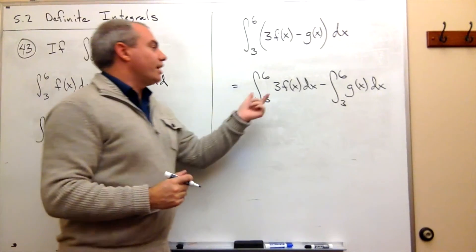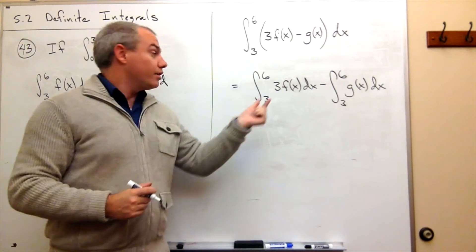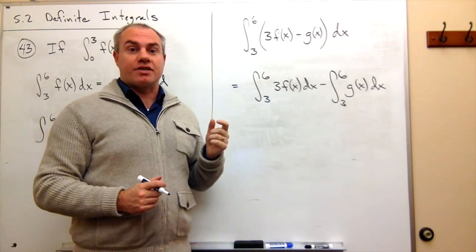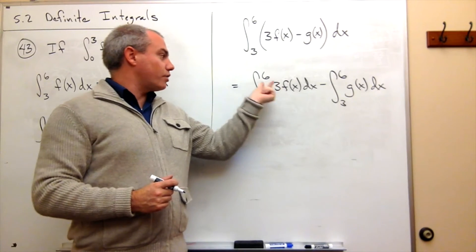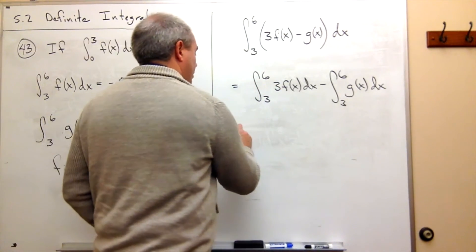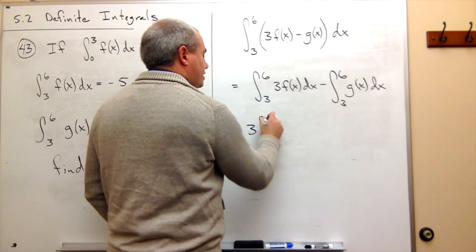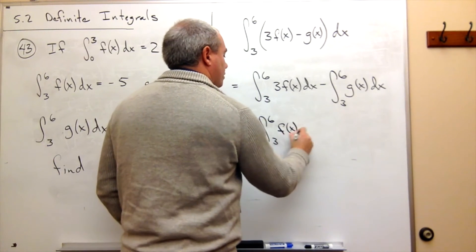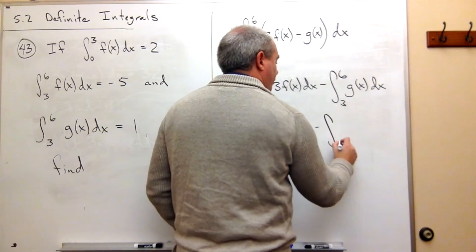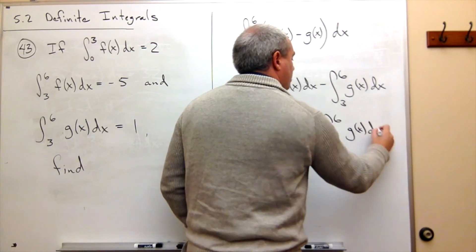Now that I've done that, notice that 3 is a constant. Constants can move in and outside of integral signs. So I can take this 3 and move it outside of the integral. If I do, then I would get 3 integral from 3 to 6 of f of x dx minus the integral from 3 to 6 of g of x dx.